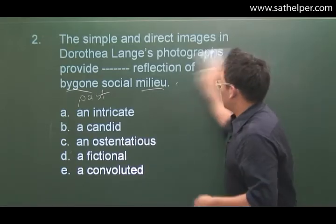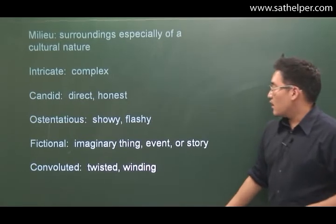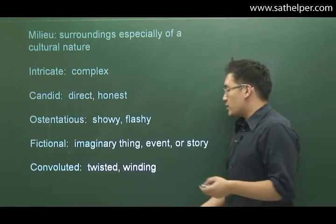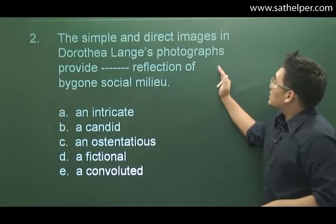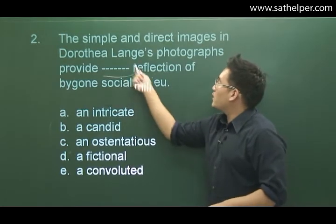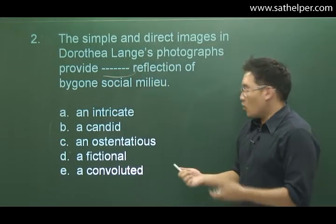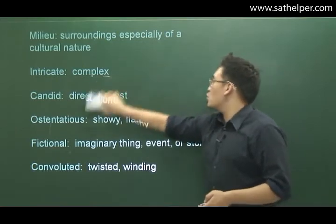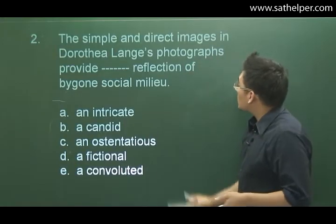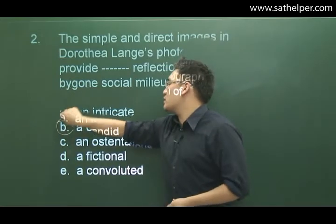Intricate means complex. Candid means direct or honest. Ostentatious means showy or flashy. Fictional refers to an imaginary thing, event, or story. And convoluted means twisted or winding. Looking back at the sentence, it's the simple and direct images which provide some sort of reflection. So the quality of the reflection is going to be simple and direct. The word that fits is candid, because candid means direct and straightforward — not hiding anything. The best answer is B, candid.